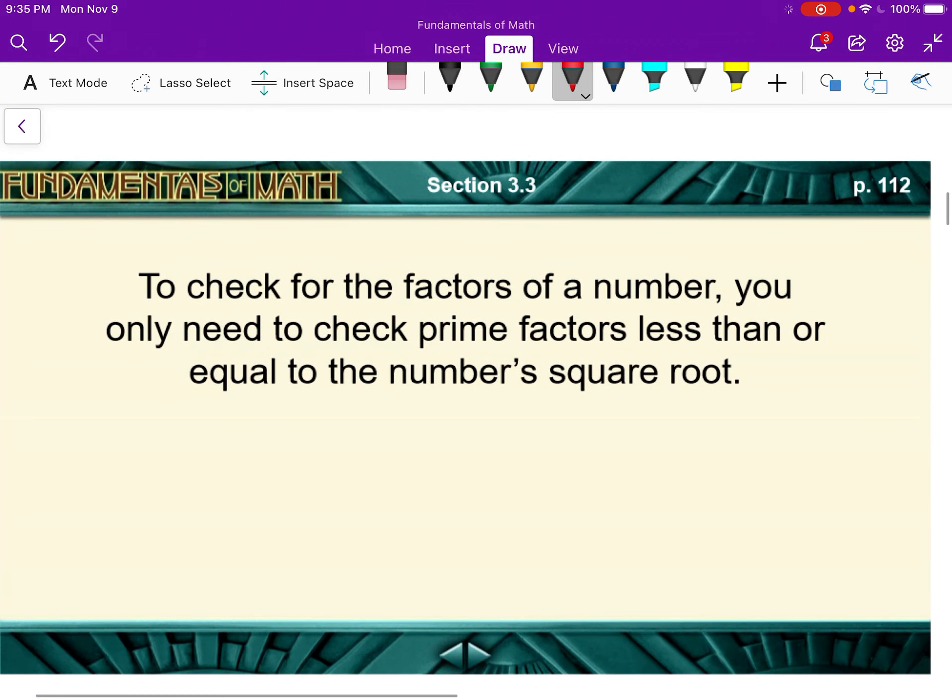Now when you're checking for factors of a number to determine if it has more factors than just one and itself, we check numbers and we go all the way up to less than or equal to the number square root. And so if we're finding if there's any factors of 51...